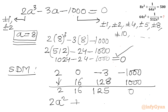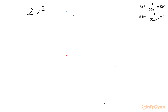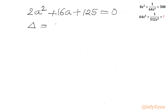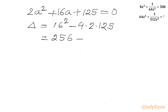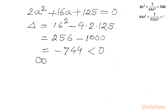The quadratic factor is 2a² + 16a + 125 = 0. Let me check the discriminant: b² - 4ac = 16² - 4 × 2 × 125 = 256 - 1000, which is negative. Because the discriminant is negative, we will get only complex solutions, so this quadratic is rejected.